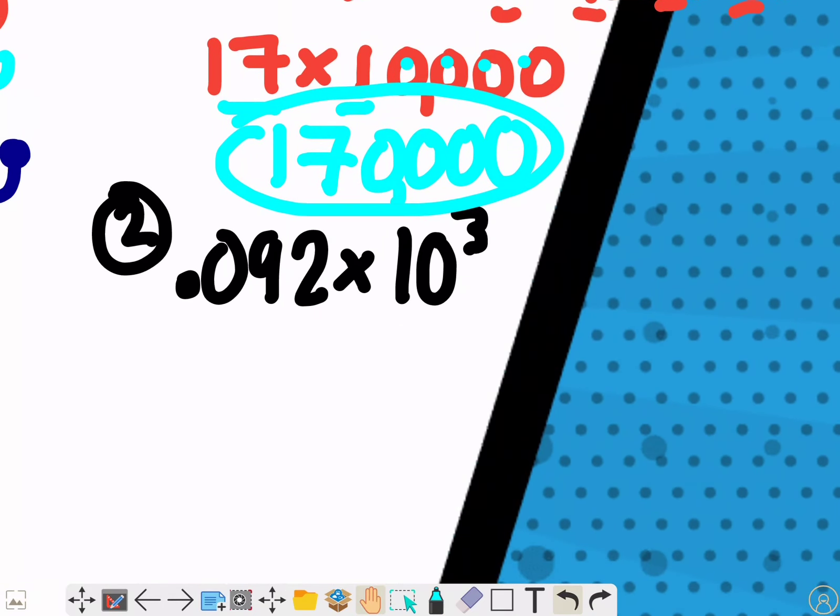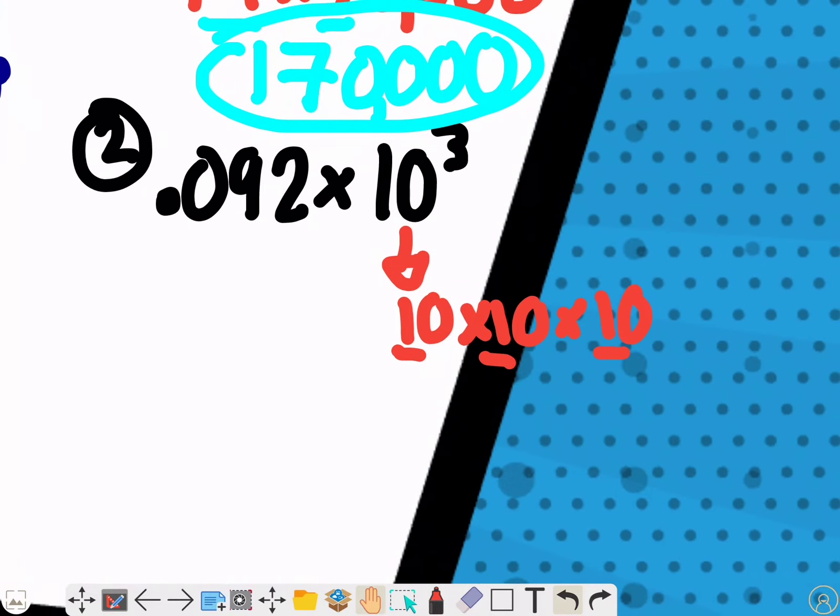In this problem, I have to figure out what ten to the third power is. Ten times ten times ten is one times one times one, which is one with three zeros: one thousand. And I have the number point zero nine two times one thousand.